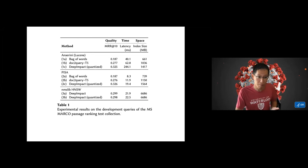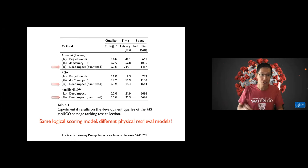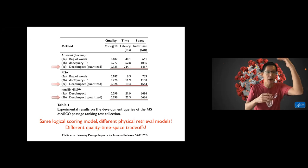Here's an experiment that we did as part of our work to sort of illustrate that point a little bit more. What we did is on the MS MARCO passage ranking test collection, we took the DeepImpact logical scoring model but played with different physical realization physical retrieval models. The DeepImpact scoring model was just published at SIGIR 2021 and here we present three different physical realizations: one in Lucene inverted index, another using PISA another inverted index system, and then the third using HNSW implementation in NMSlib. For each you get a different quality, time, and space trade-off.